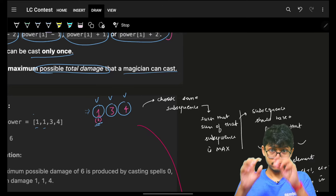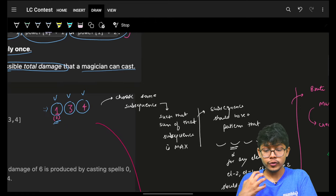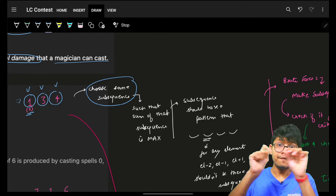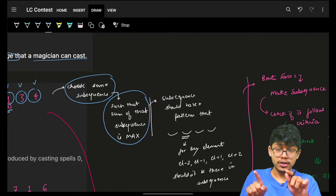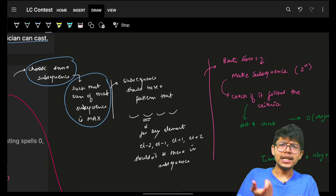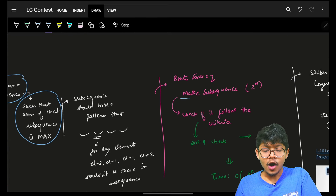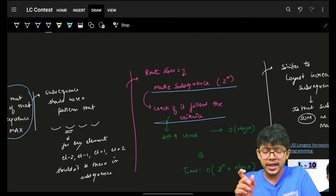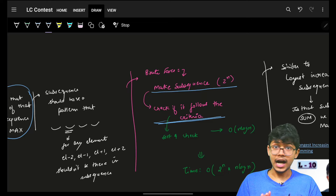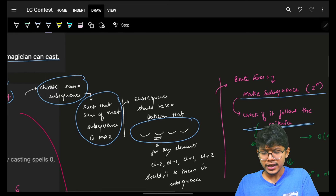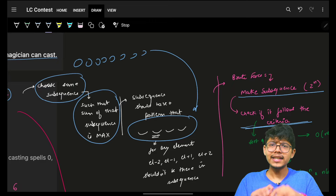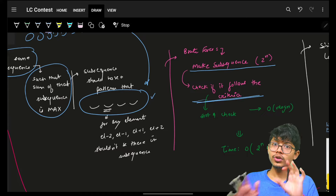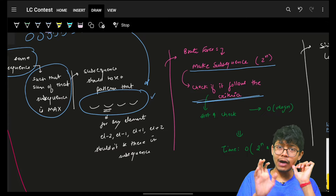It is essentially: given an array of distinct power values like 1, 3, 4, choose some subsequence of this input array such that the total summation is maximum. Obviously, one approach is brute force — generate all possible subsequences (2^N of them), then for every subsequence go and check if it's a valid spell configuration. To check validity: if you take an element, then element-1, element-2, element+1, and element+2 should not be present inside your subsequence. You can check this by sorting or using a hash map in O(N) or O(N log N).